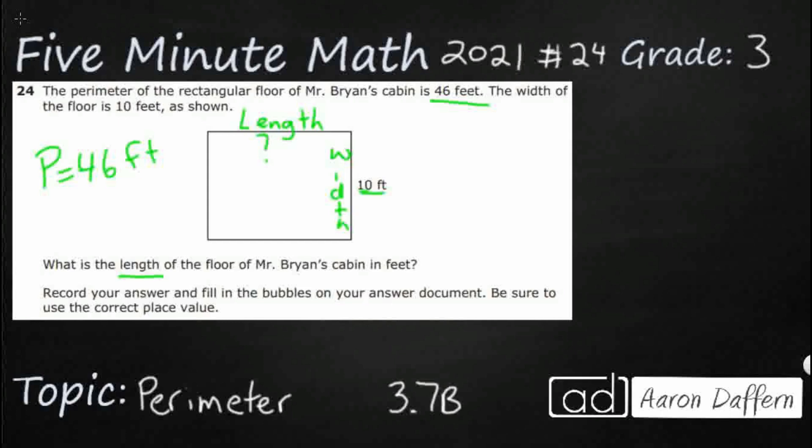But how are we supposed to figure out what that measurement is? There's no ruler, we're not supposed to measure anything, because obviously this isn't 10 feet. And there's no A, B, C, or D to choose from — there's no multiple choice. That's why this is so difficult. So let's figure out what we know about perimeter.